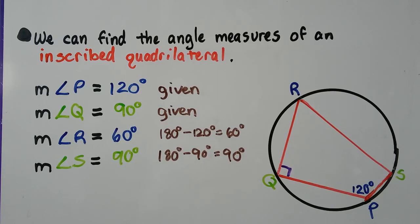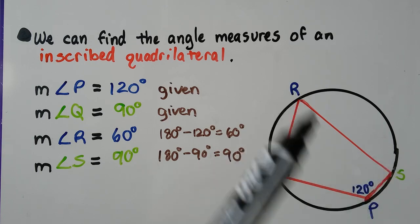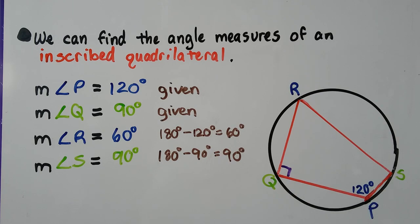We can find the angle measures of an inscribed quadrilateral. Here we have a quadrilateral inscribed in a circle, and it's telling us that the measure of angle P is 120 degrees. That's given. We can also see this right angle box right here. So we know Q is 90. We can figure out what R and S are with this given information.